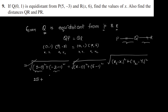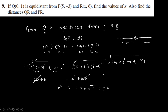Minus 3 minus 1 whole square is minus 4, and minus 4 squared is 16. On the other side, x minus 0 whole square plus 6 minus 1 whole square is 5, and 5 squared is 25. So 25 plus 16 equals x squared plus 25. The 25s cancel, giving x squared equals 16, so x equals plus or minus 4. That's how we find the answer.